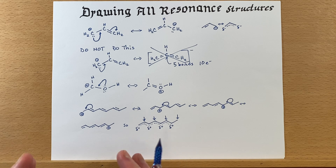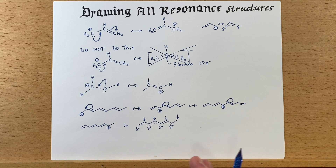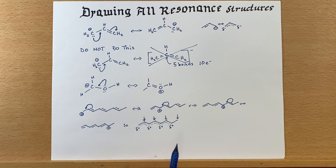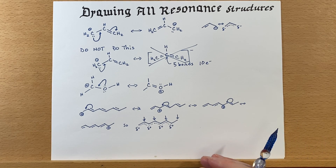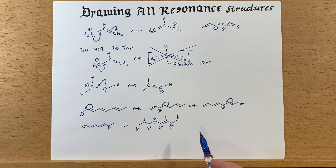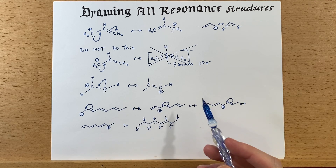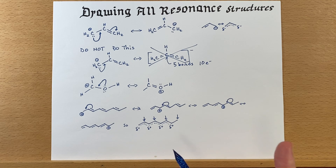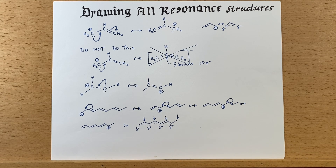We can also explain other reactivity when we include all the resonance structures. That's one of the first things chemists will do — draw all the resonance structures to identify why a reaction happened at a particular site: there's a partial negative charge here, a partial positive charge there. Make sure you keep the octet rule in mind and that you do not move any atom positions — only move electrons. That's a little bit about drawing all of the resonance structures; we'll see you in the next video.